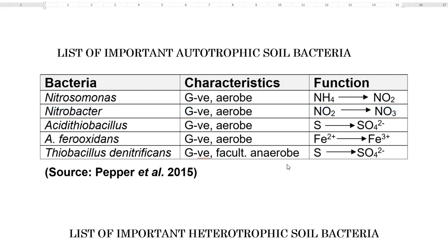The next three groups of organisms are mainly involved in the sulfur cycling. That is Acidithiobacillus and Acidithiobacillus ferroxidans — these are the two groups of sulfur bacteria involved in the sulfur cycle. Acidithiobacillus ferroxidans, in addition to sulfur oxidation, also oxidizes iron, converting ferrous iron into ferric. The last one is Thiobacillus denitrificans, which is mainly associated with the denitrification process in the soil system.